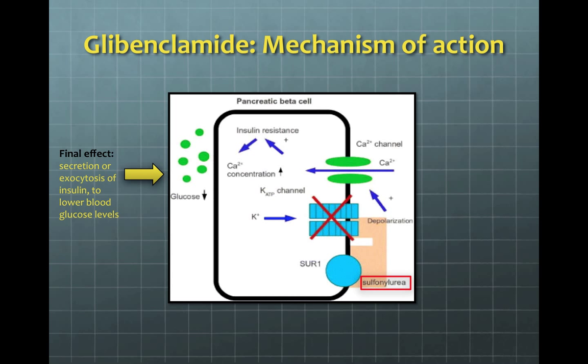Glibenclamide first acts by binding to the sulfonylurea receptor 1, or SUR1, on the surface of pancreatic beta cells and reduces potassium conductance to lead to a depolarization of the membrane. This depolarization stimulates calcium ion influx through the voltage-gated calcium channels and raises the intracellular concentration of calcium ions in order to induce the secretion or exocytosis of insulin.